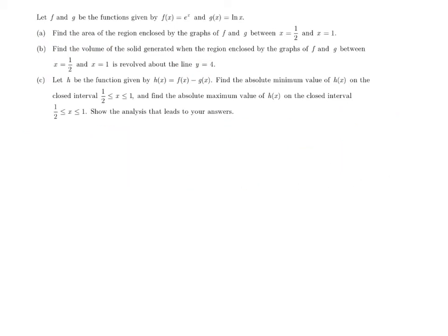All right, now they threw a little twist on us. They're telling us there's this new function h, and that's given by h(x) = f(x) - g(x). Find the absolute min value of h on the closed interval 1/2 to 1, and the absolute max of h on the closed interval 1/2 to 1. Show the analysis that leads to your answer. So basically, this analysis, obviously, they're just saying, show work. All right, we're not going to give you any credit without work.